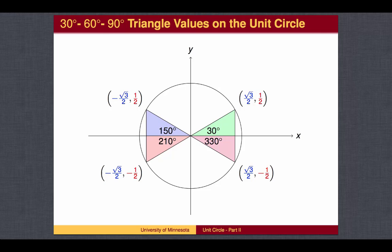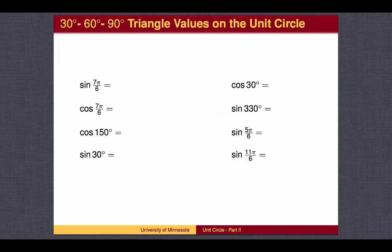Here is the set of all four angles, where the cosine value is either plus or minus square root of 3 over 2, and the sine values are either plus or minus 1 half. The angles can also be measured in radians.